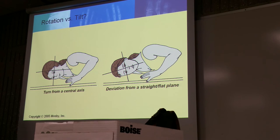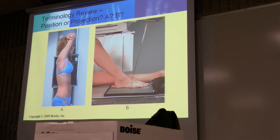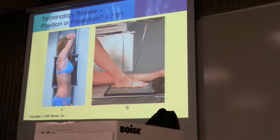Rotation versus tilt. Position or projection — what position? Erect, upright. Left lateral. What about this projection — is it AP or PA? AP. Is there a slight angle to that central ray? Yes. So what are we going to call that? Axial projection. So if it's not completely perpendicular or parallel, it becomes axial.